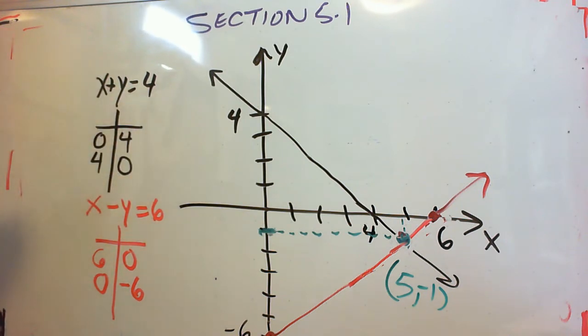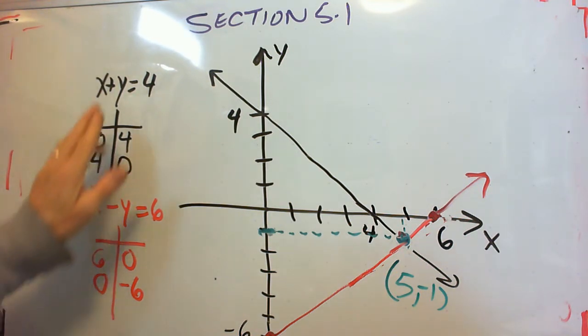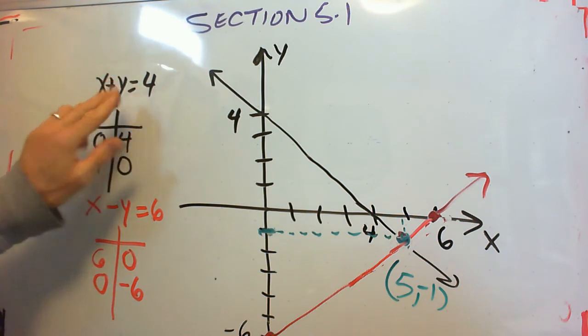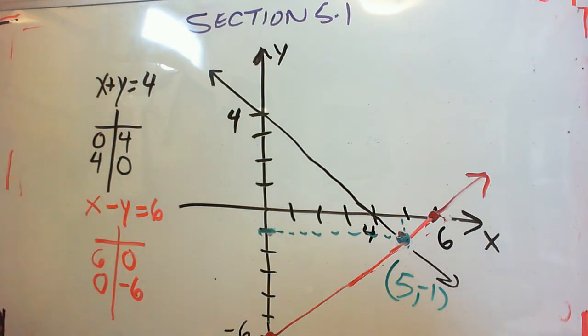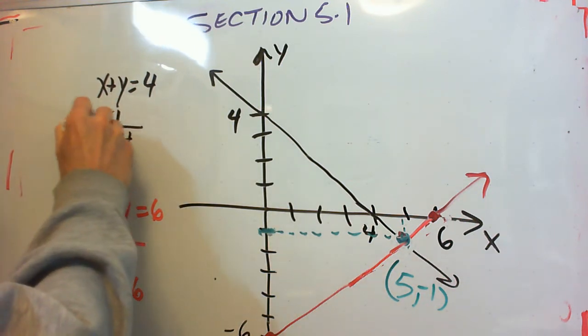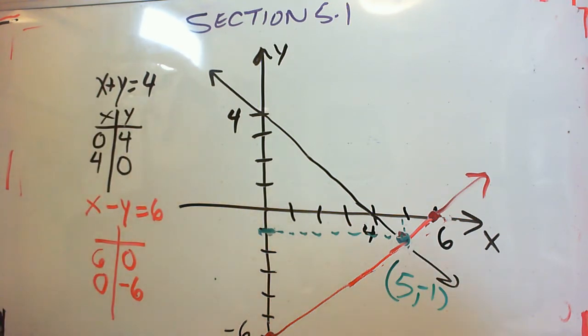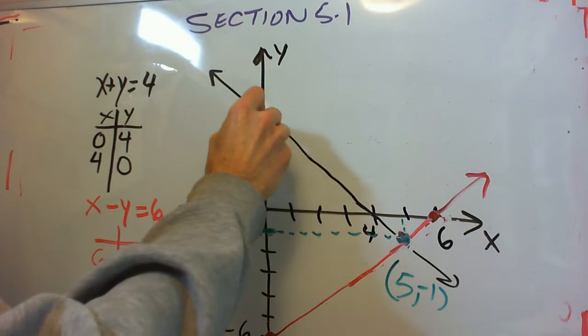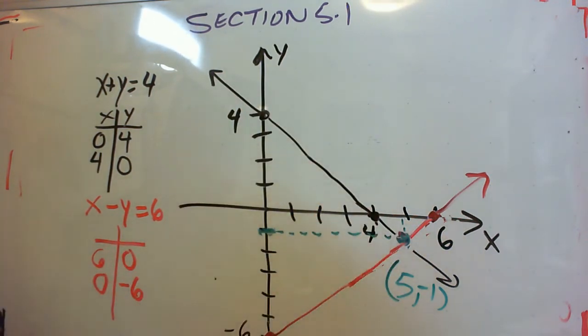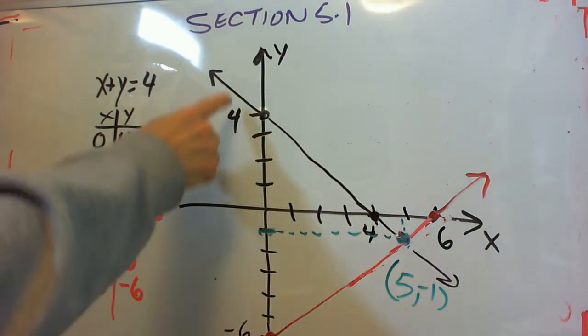X plus y equals 4. Two easy points are the intercepts. When x is 0, y is 4. When y is 0, we're left with x equals 4. Just covering up the y here, because y is 0. And so we get our two points that we need, 0, 4 and 4, 0. The intercepts. So there's our first line.